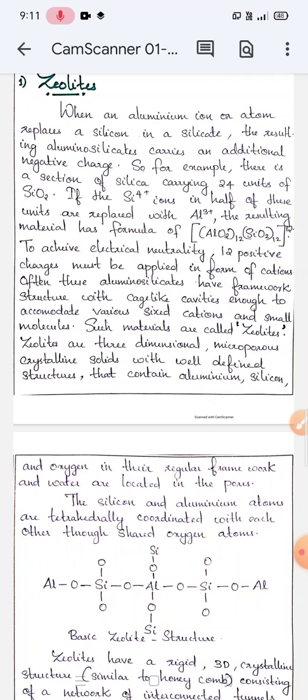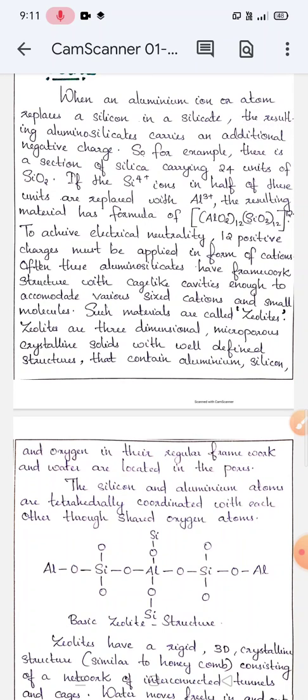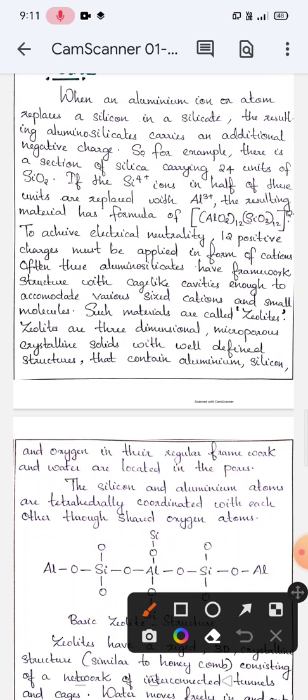Consider a section of silica carrying 24 units of silicon dioxide. The silicon is in the +4 oxidation state and in half of these SiO2 units, that is in 12 units, the silicon 4+ ions are replaced with aluminum 3+. Then the resulting material has a formula of this.